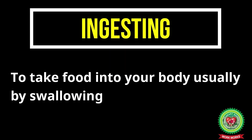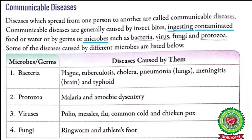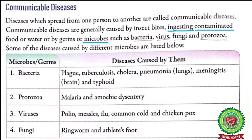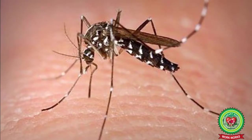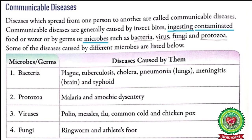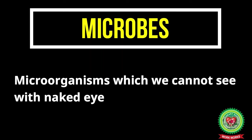Underline the word 'contaminated' and write down its meaning: made impure. Communicable diseases are also caused by germs or microbes such as bacteria, virus, fungi, and protozoa. So the main causes of communicable diseases are insect bites, contaminated food, and germs. Underline the word 'microbes' and write down its meaning: microorganisms which we cannot see with the naked eye.